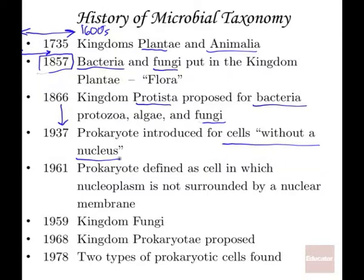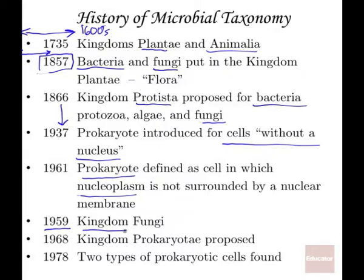From the 1930s to the 1960s, we actually created a definition for prokaryotes: that prokaryotes did have DNA, but they had a nucleoplasm that was not surrounded by a membrane. In 1959, we created a separate kingdom for the fungi and then a kingdom for the prokaryotes. Finally in the late 1970s, we actually created two different kinds of prokaryotic cells, which we will discuss in the next slide or two.